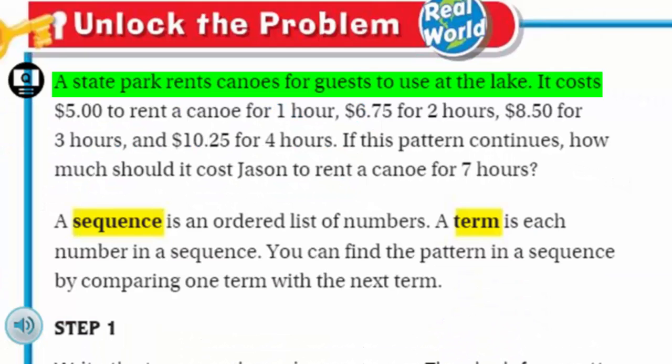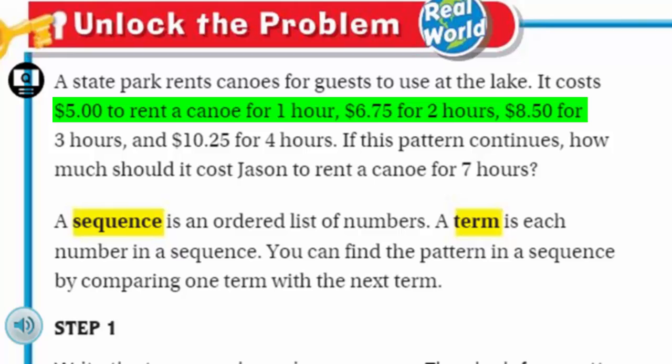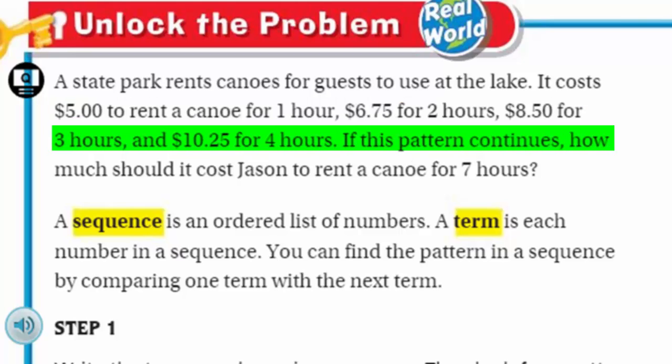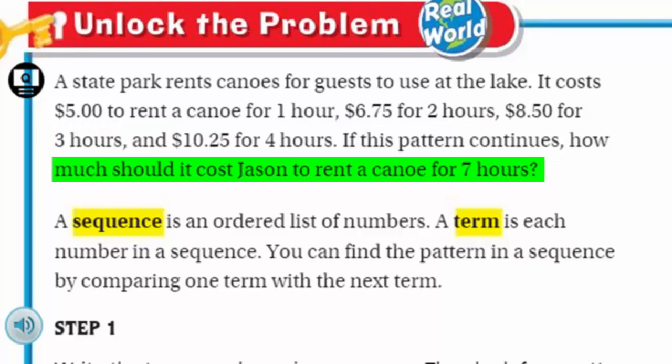Let's take a look. It says a state park rents canoes for guests to use at the lake. It costs $5 to rent a canoe for one hour, $6.75 for two hours, $8.50 for three hours, and $10.25 for four hours. Now, it says, If this pattern continues, how much should it cost Jason to rent a canoe for seven hours? Oh, I love these kinds of problems.